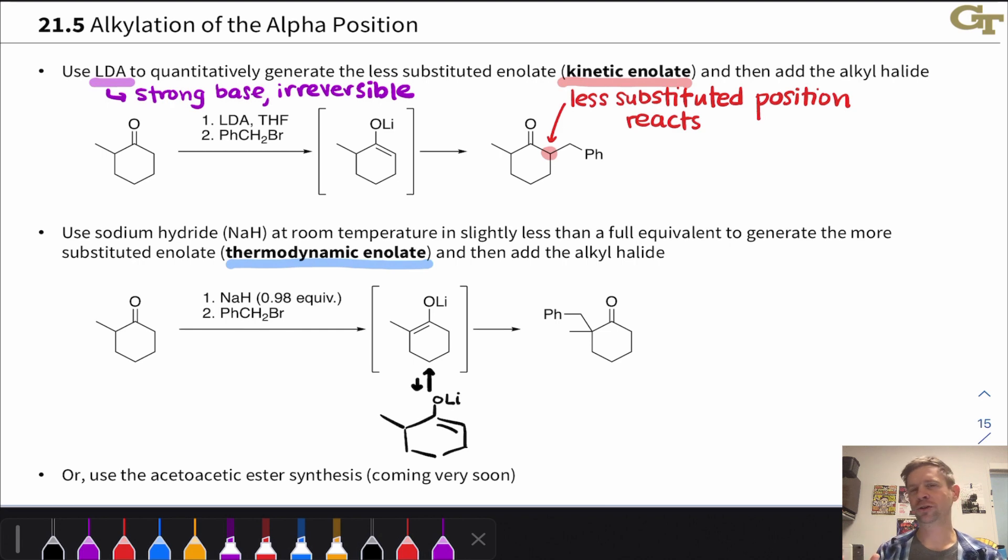And I would caution you against using this too much or worrying about this too much. The acetoacetic ester synthesis is a perfectly interchangeable approach with this for substituting at the more substituted position. It takes advantage of what I call pKa biasing, making the pKa at this alpha carbon much lower than the pKa over here, is another way to selectively substitute at the more substituted position.